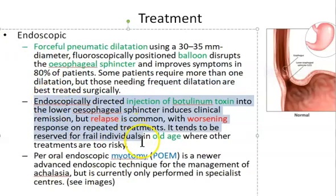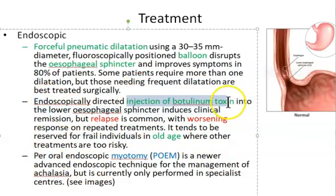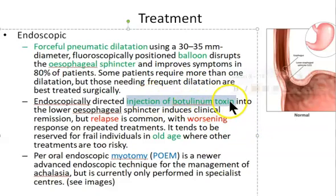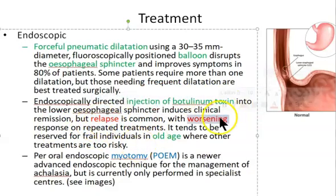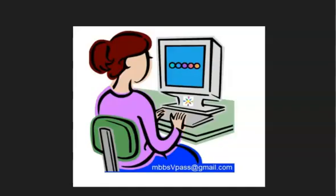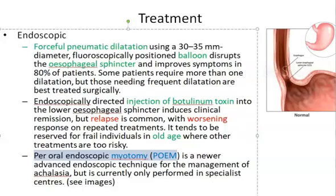In old people, you can try injection of botulinum toxin. Botulinum toxin is going to relax the muscle — that is why they are trying it. Why only in old people? Because it can cause relapse and sometimes worsening.